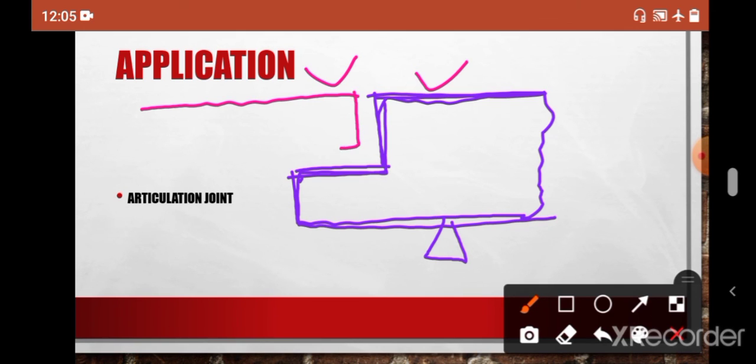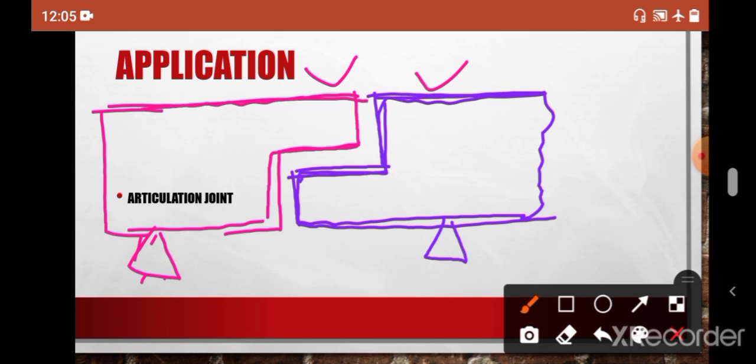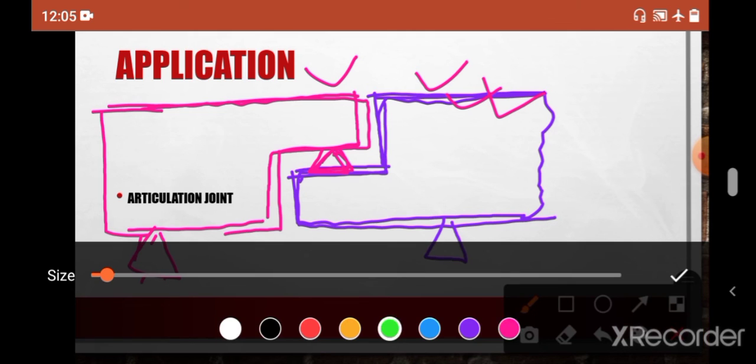Here is the support again. So now this left one is resting over this violet one by a hinge. Here the support is hinge type, not roller type. This is the support. Clear.